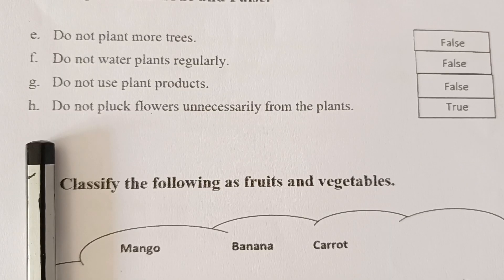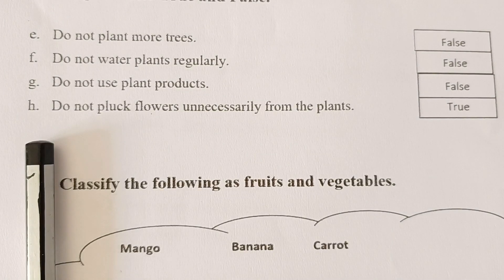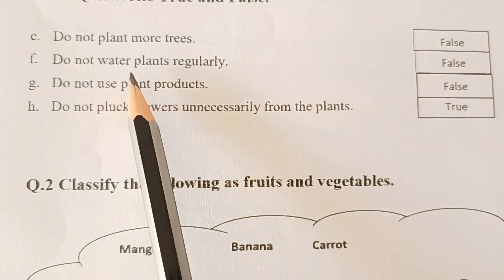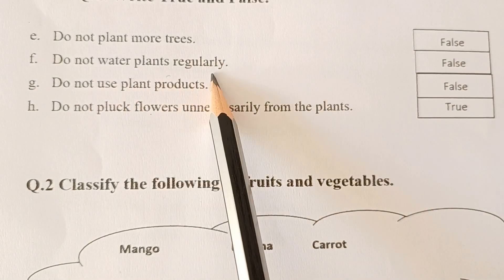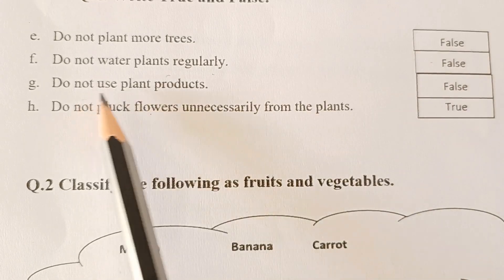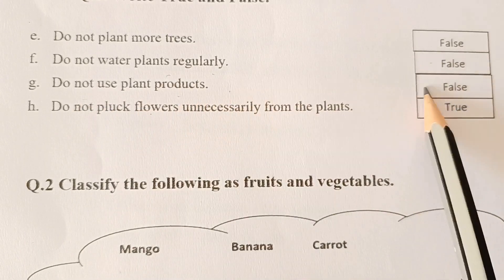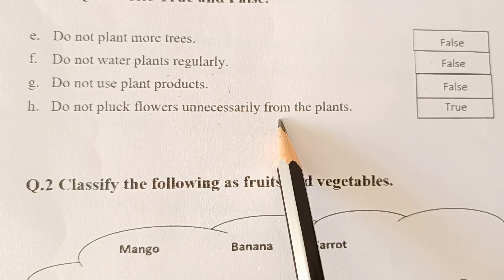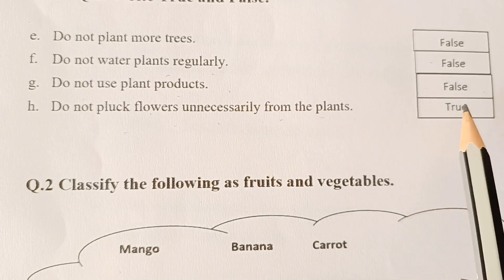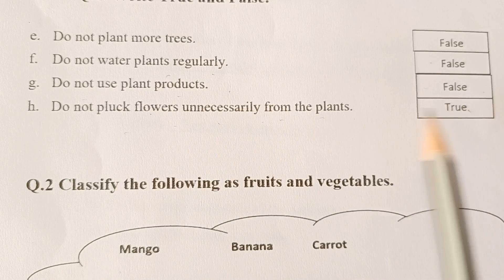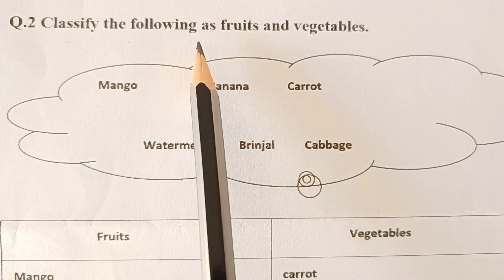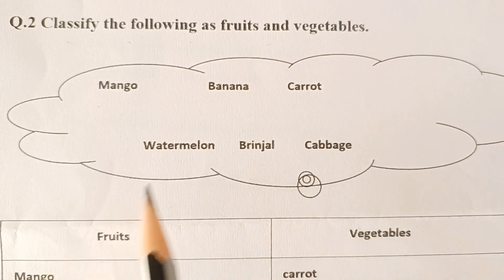The next question is: Write True and False. Do not plant more trees — False. Do not water plants regularly — False. Do not use plant products — False. Do not pluck flowers unnecessarily from the plants — this statement is True.